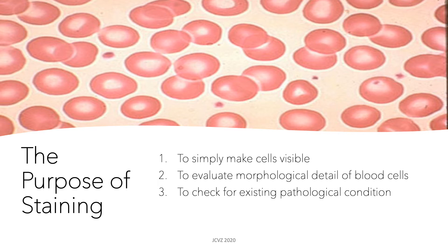Also, by looking at the morphological details of the blood cells, we might be able to see some abnormalities, and this can result in the detection of different pathological conditions. For example, if we see that there are many immature white blood cells, this can be linked to different leukemias or cancers of the blood.